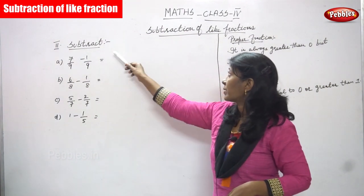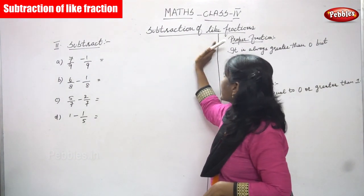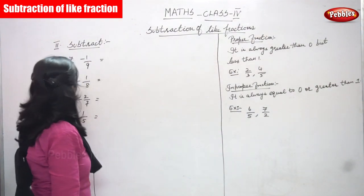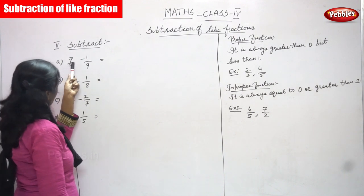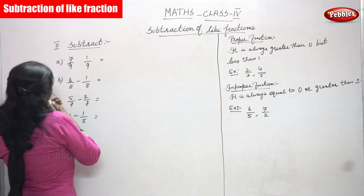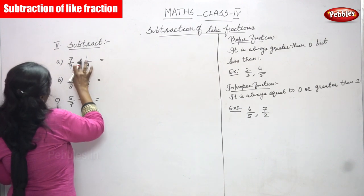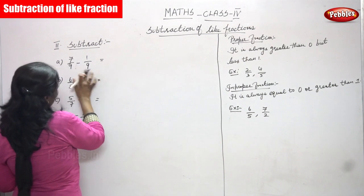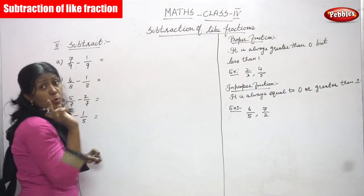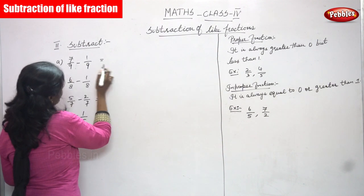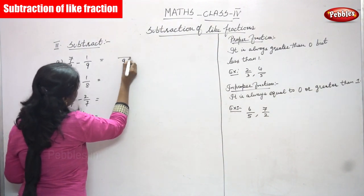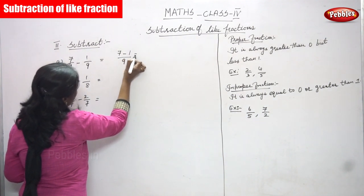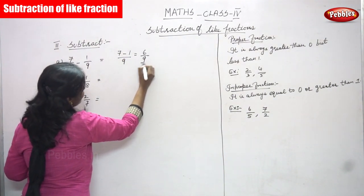Now we are going to see subtraction — the subtraction of like fractions. The first question is 7/9 minus 1/9. For like fractions, you look at the denominators first. Since both denominators are the same, you write the denominator one time, then subtract the numerators: 7 minus 1 gives you 6/9, which is the right answer.